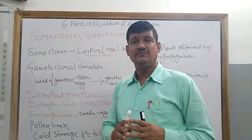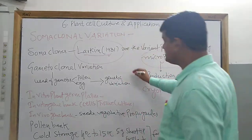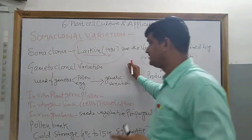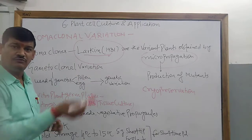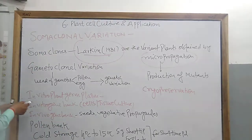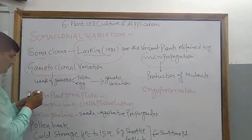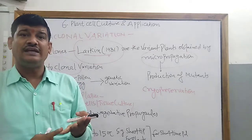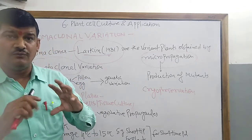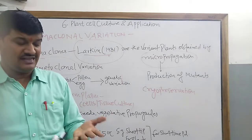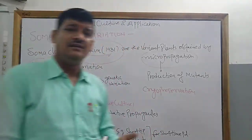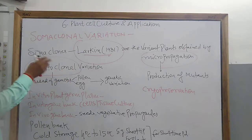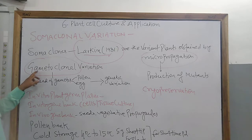Somaclones are also useful in the production of mutants. Mutants are those genetically changed plants in which their genetic makeup has been altered. Apart from that, nowadays we are also obtaining gametoclonal variation. Instead of using tissues like root, stem, and leaf, if we are taking gametes like pollen grains and egg cells for the production of these clones, we will use the term gametoclonal variation.